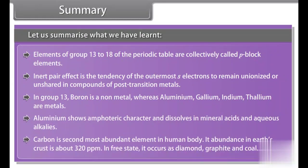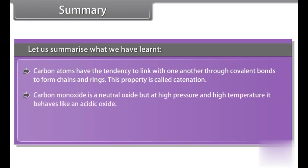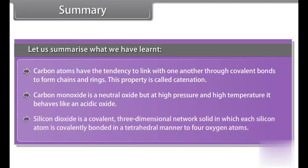Aluminium shows amphoteric character and dissolves in mineral acids and aqueous alkalies. Carbon is second most abundant element in human body. Its abundance in earth's crust is about 320 parts per million. In free state, it occurs as diamond, graphite and coal. Carbon atoms have the tendency to link with one another through covalent bonds to form chains and rings. This property is called catenation. Carbon monoxide is a neutral oxide but at high pressure and high temperature, it behaves like an acidic oxide. Silicon dioxide is a covalent three-dimensional network solid in which each silicon atom is covalently bonded in a tetrahedral manner to four oxygen atoms.